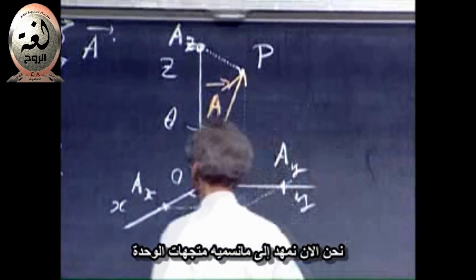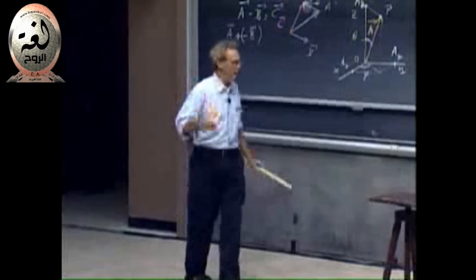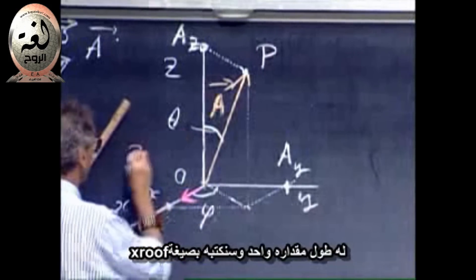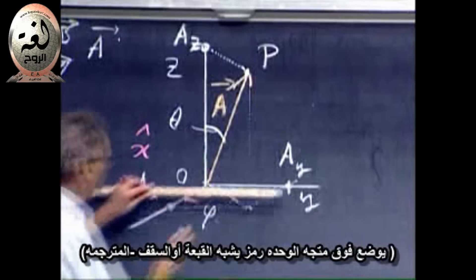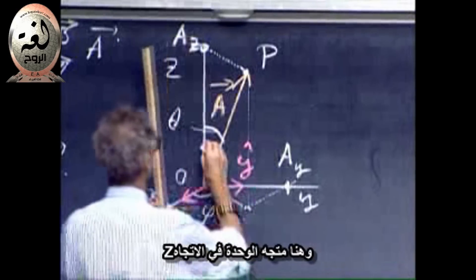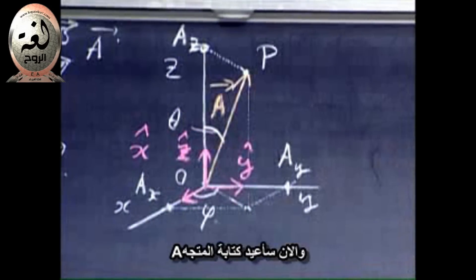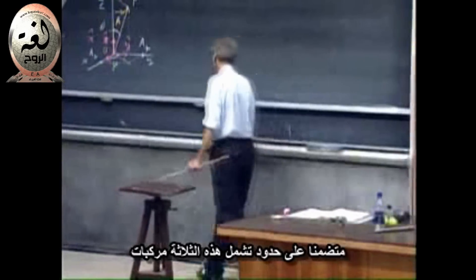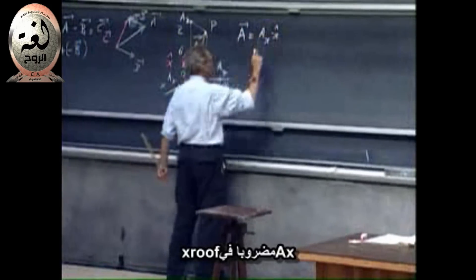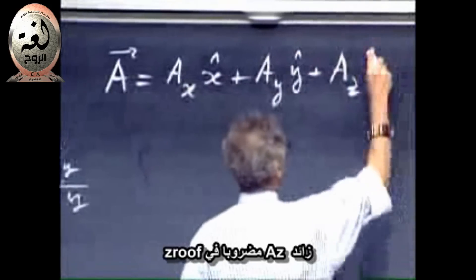We now introduce what we call unit vectors. Unit vectors are always pointing in the direction of the positive axis, and the unit vector in the x-direction is this one. It has a length one, and we write for it x-roof. Roof always means unit vector. And this is the unit vector in the y-direction, and this is the unit vector in the z-direction. And now I'm going to rewrite vector A in terms of the three components that we have here. So the vector A I'm going to write as A_x times x-roof plus A_y times y-roof plus A_z times z-roof.